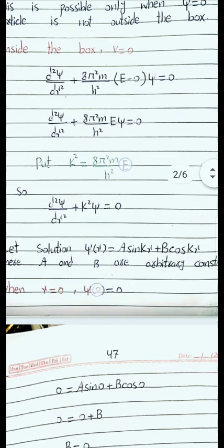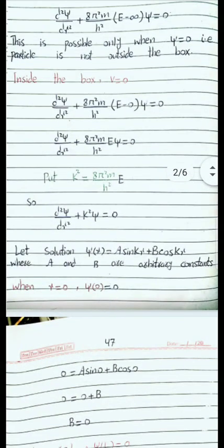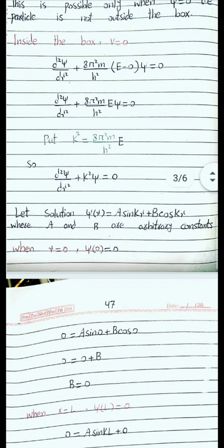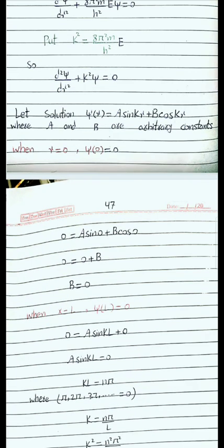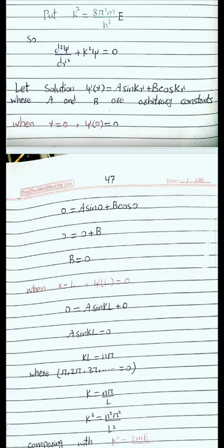The general solution of this second-order differential equation is: ψ(x) = A sin(kx) + B cos(kx). To find constants A and B, we apply the boundary conditions. Applying the first boundary condition — at x = 0, ψ = 0 — we get B = 0, since sin(0) = 0 and cos(0) = 1.